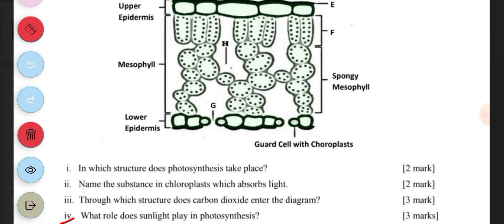Sunlight helps to give energy so that the organic compounds, which are water and carbon dioxide, are combined to form glucose and oxygen.